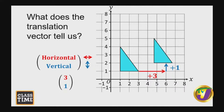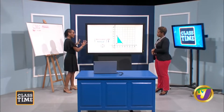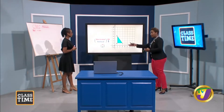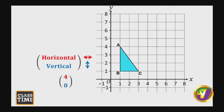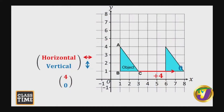Let's look at another one. We now have a movement of 4 parallel to the x-axis and 0 parallel to the y-axis. One of the values is 0 — the zero is the lower value, which tells us there's no movement parallel to the y-axis. So there's no vertical movement, no upward or downward movement. The 4 indicates four units to the right, and 0 represents no movement parallel to the y-axis.